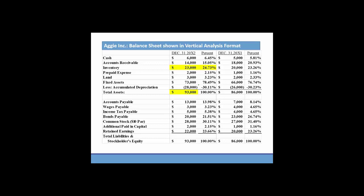Looking specifically at inventory, 20x2 inventory was $23,000, total assets were $93,000. So inventory was almost 25% of total assets. We could do the same thing if we want to look at accounts payable. Accounts payable balance is $13,000, and if we divide by total assets of 93,000, we'll see that accounts payable is 13.98% of total assets.